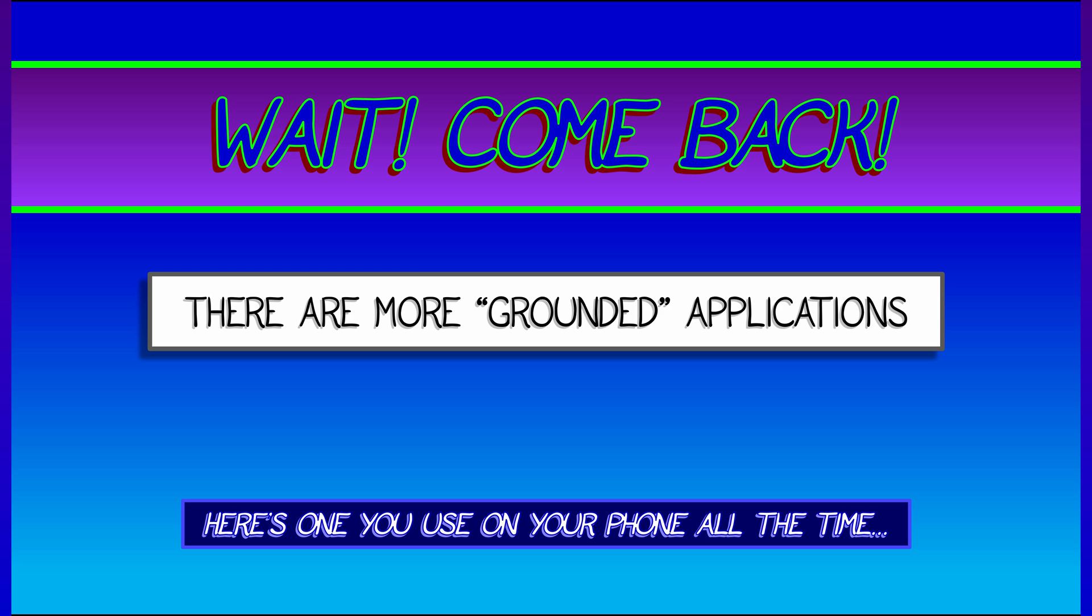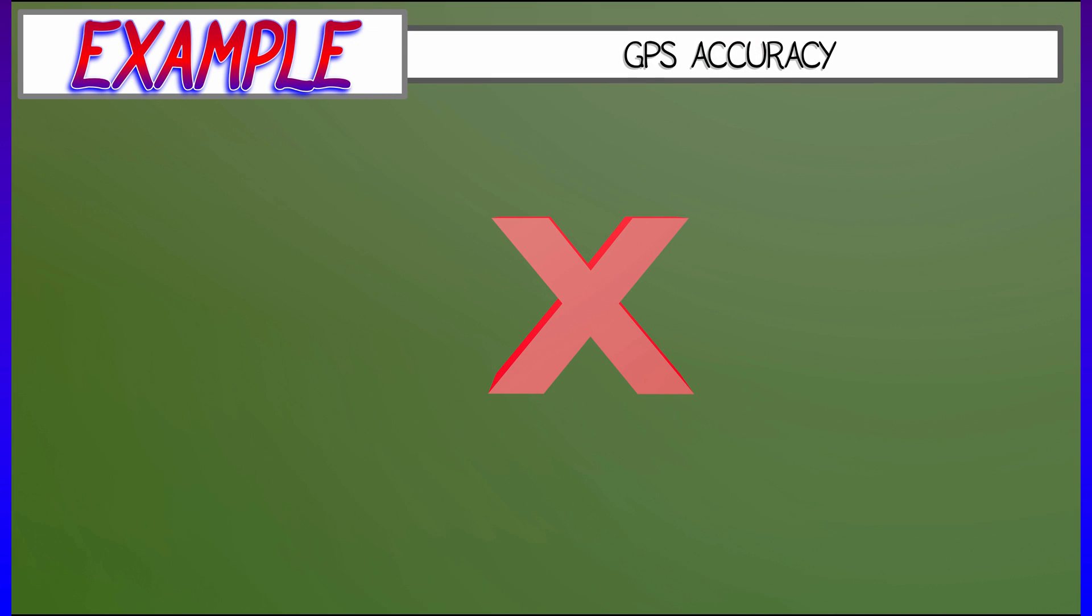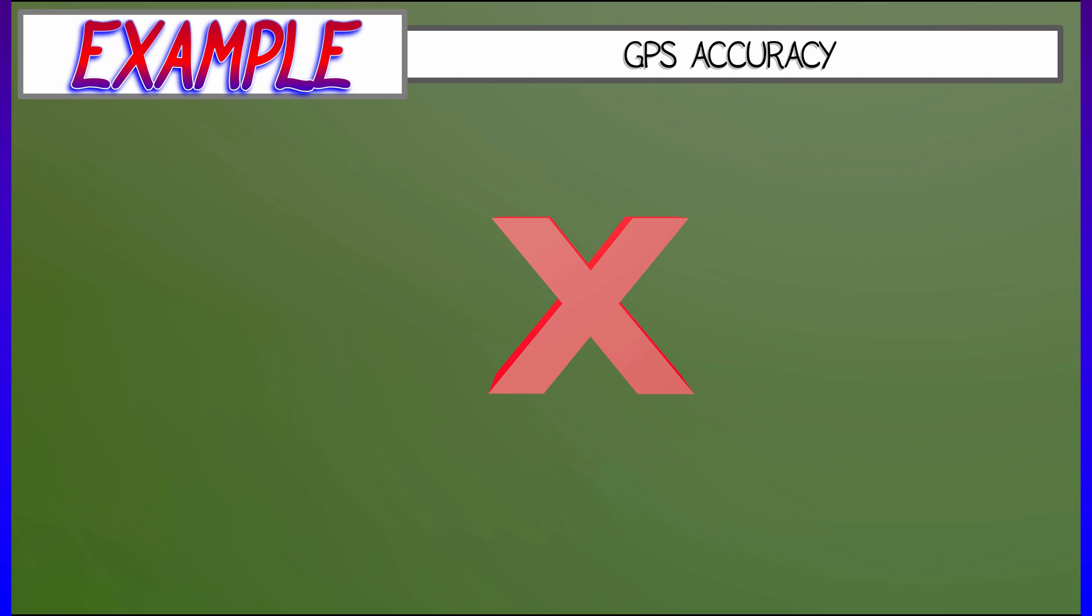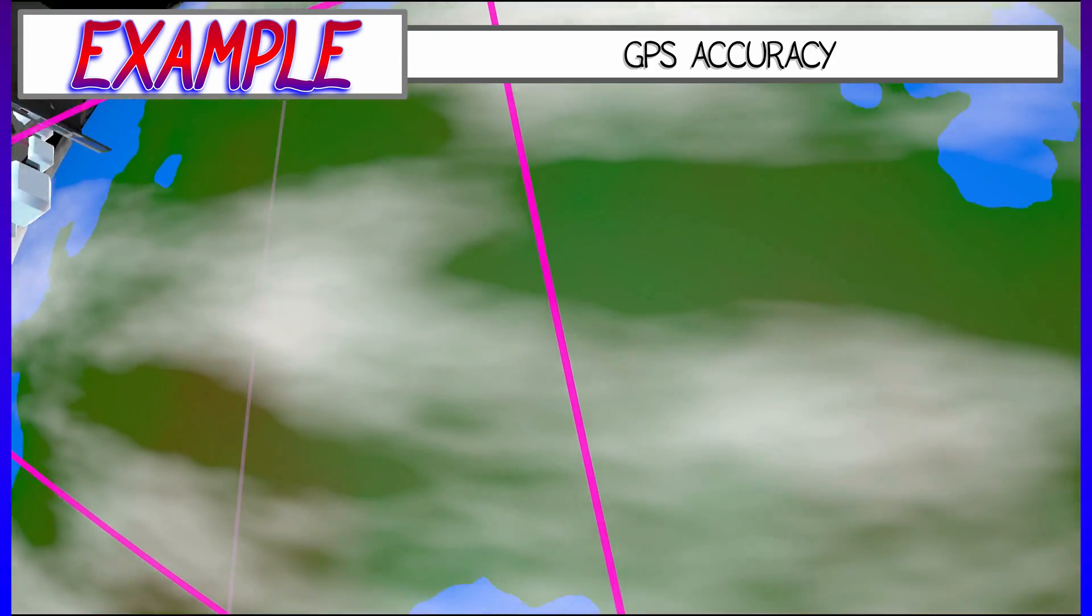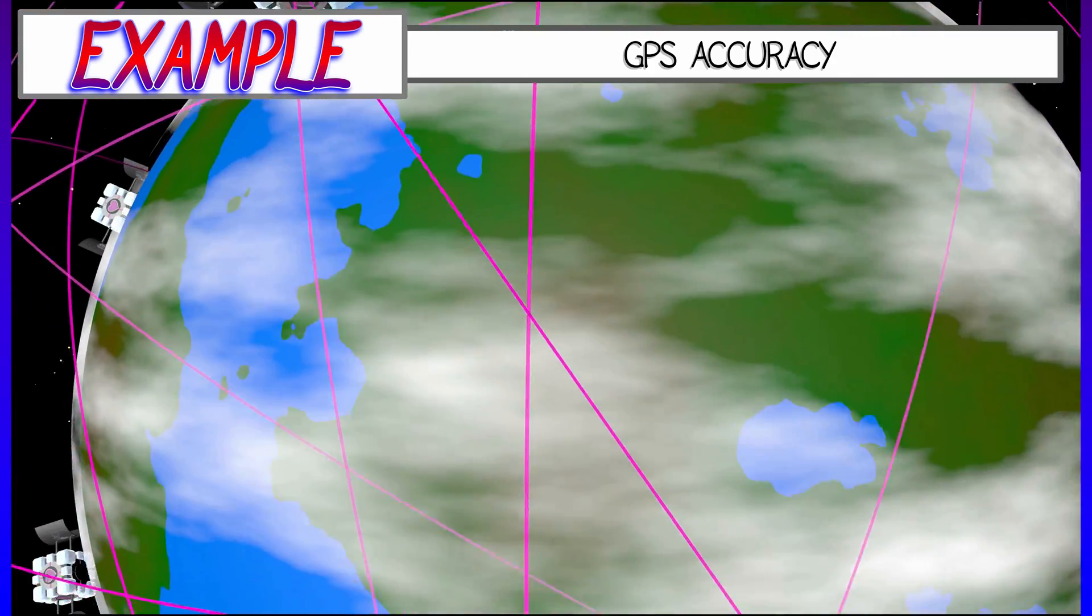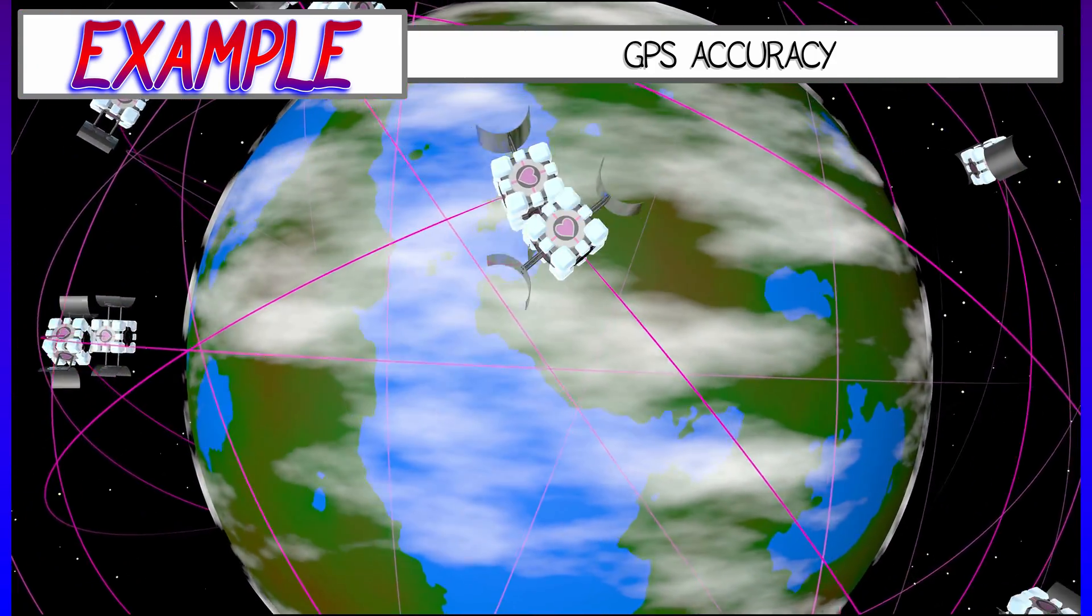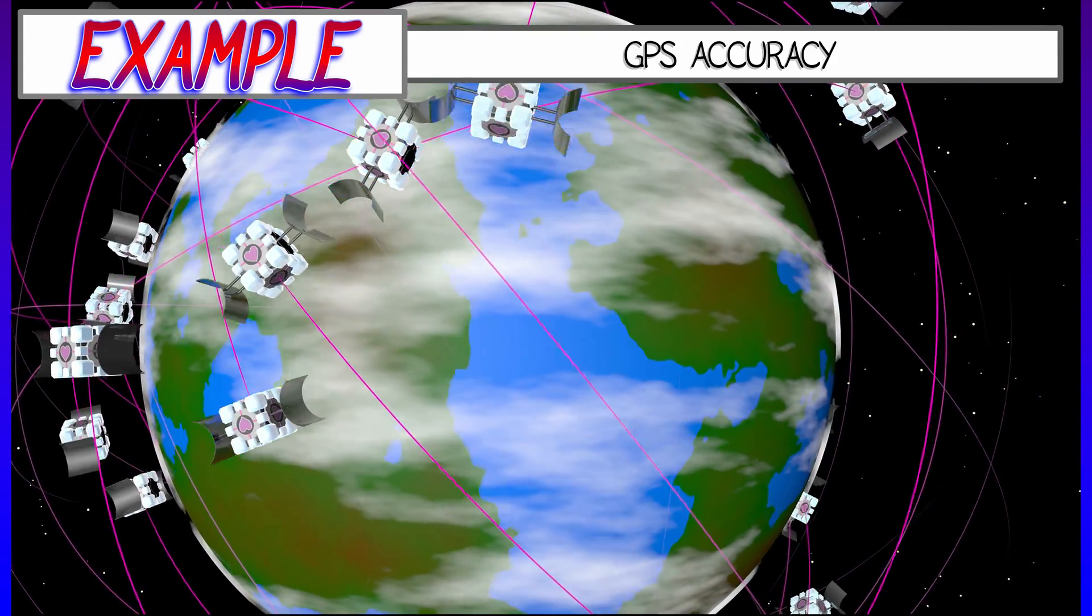In fact, here's one that you use on your phone all the time. This is very grounded because it is GPS. You know how GPS works, right? You pull out your phone and boom, X marks the spot. There you are on your street, in your city, on the planet.